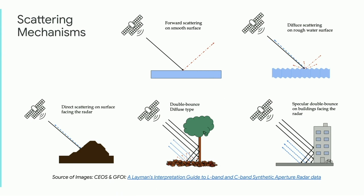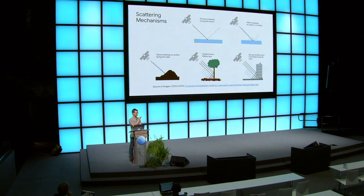There is the concept of multiple bounces — for example, a double bounce type of behavior in a forested area. There can be complex bouncing within a canopy or within something semi-permeable like snow or ice. In urban areas, there tend to be a lot of right angles, creating double bounces where most energy goes directly back to the source. A corner reflector with three different sides together can produce very bright returns, and they're actually used to calibrate radars by placing them in a field.